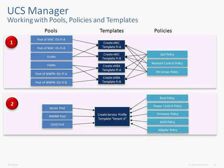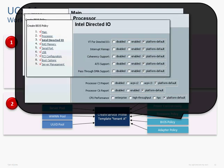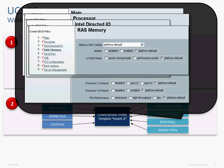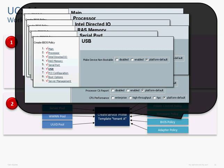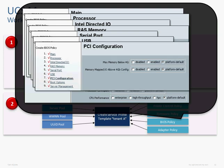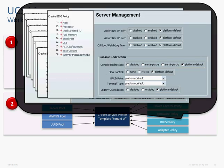At the service profile level, let's start by looking at the BIOS. There are a lot of BIOS settings you can set here — a total of nine different tabs you can run through to set individual settings. If you want to change these from the defaults, you create a policy, set whatever you want, and assign it to the service profile. UCS Manager will ensure these settings are applied to the blade this service profile will eventually run on.